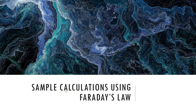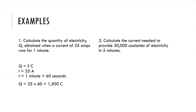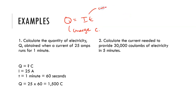Now we've defined what Faraday's laws are and have our two equations to work from, it's time to see how these might appear in different questions. Here are a couple of examples using our Q equals IT calculation, where Q is the charge in coulombs, I is our current in amps, and T is our time in seconds.